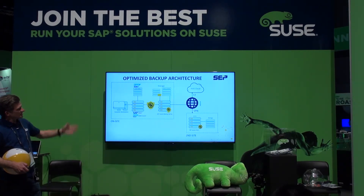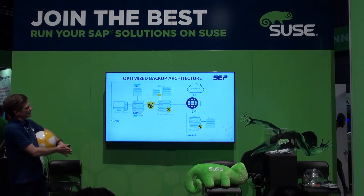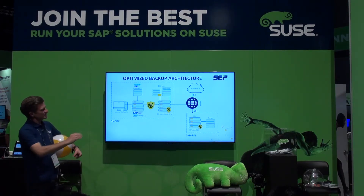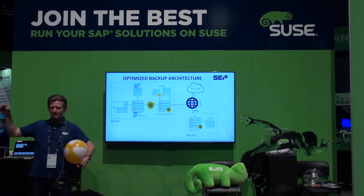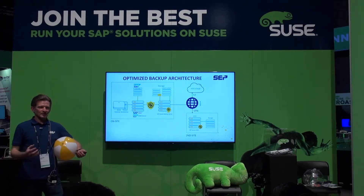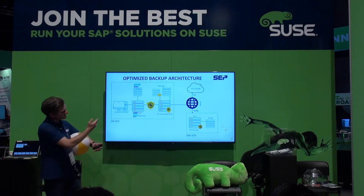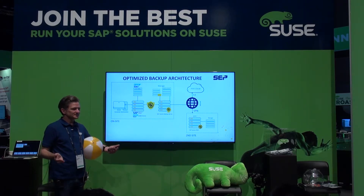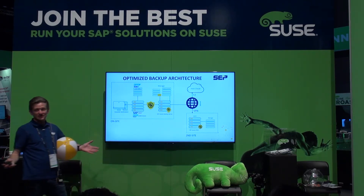What does an optimized backup architecture look like? You have the HANA server, you have the SEP backup server, and potentially you're doing deduplication on your storage. More importantly, you can replicate off to a second site, or use our S3 connector to back up to Amazon or Google or another data center. We can do either replication or cloud backup with our S3 connector. Many customers have tape on site and want to move to cloud — this is the solution. We also support SUSE Enterprise Storage and have tape support as well.